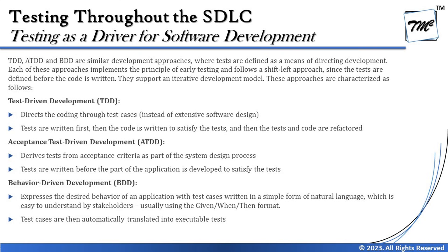These three techniques are basically testing approaches, but there is a twist in the terminology of whether it is a development approach or a testing approach — because the development is driven by the testing. That means test cases are written first, or automation test scripts are written first, and then the development will be done. These are very similar to each other; the similarity is that tests are defined as means of directing the development process. Each of these approaches implements the principle of early testing and follows a shift-left approach.